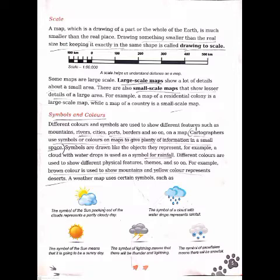Symbols are drawn like the object they represent. For example, a cloud with a water drop is used as the symbol for rainfall. Different colors are used to show different physical features. For example, brown color on a map is used to show mountains, and yellow color is used to show deserts. A weather map uses certain symbols — let's look at those symbols.